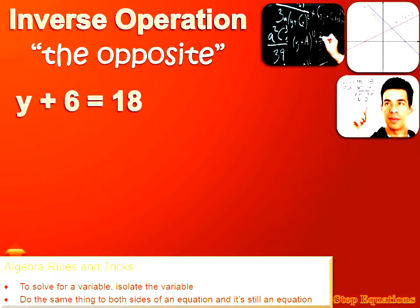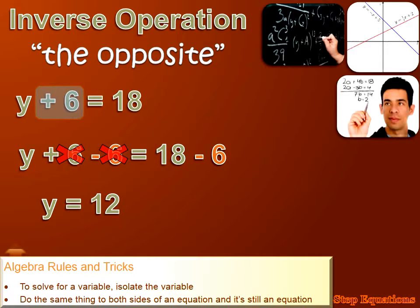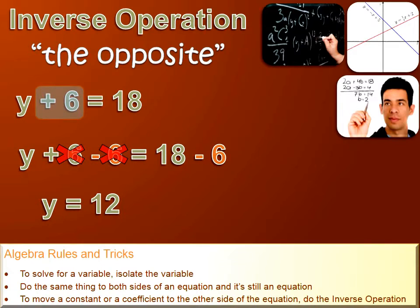How's that going to be useful? Let's say I had y plus 6 equals 18. I want to isolate my y so it says y equals something — I've got to get rid of that 6. What's the opposite of adding 6? It's subtracting 6. If I subtract 6 from both sides of the equation, I eliminate the 6 on the left side and leave just y. On the right side I'd have 18 minus 6, which is 12, so y equals 12. That's our third rule: to move a constant or a coefficient to the other side of an equation, do the inverse operation.